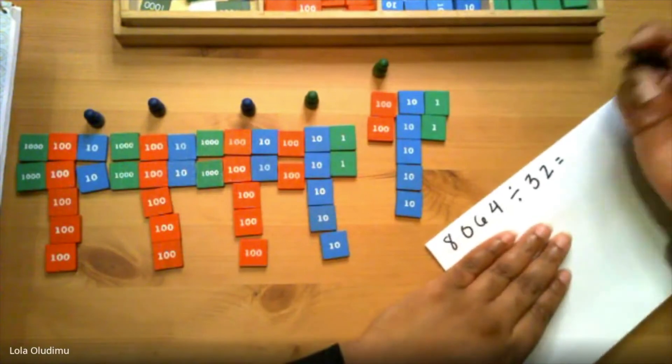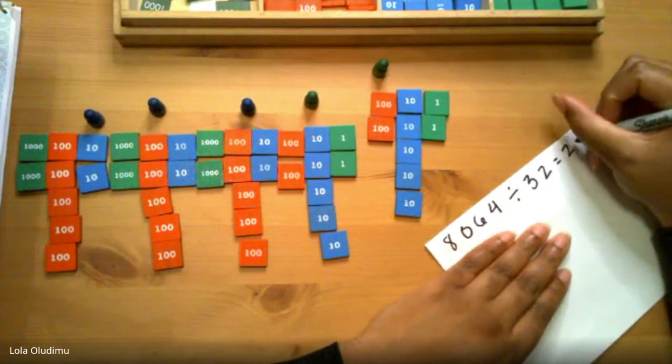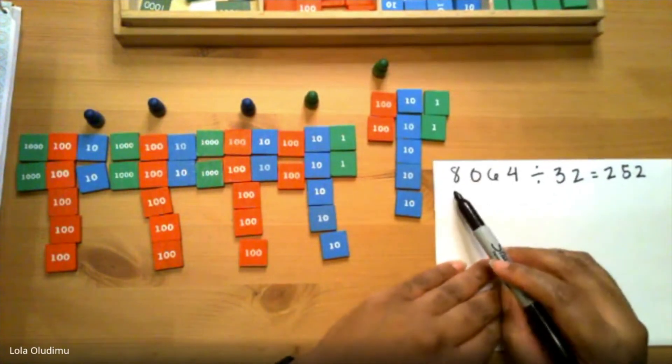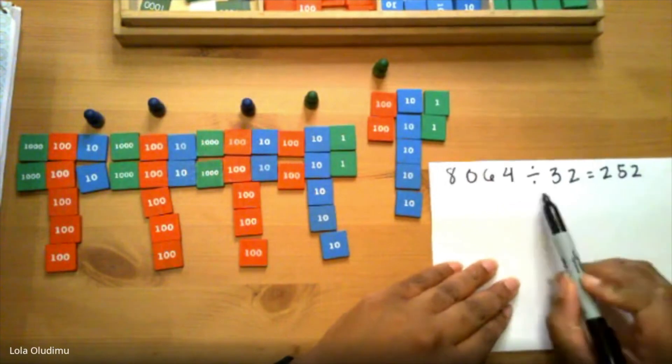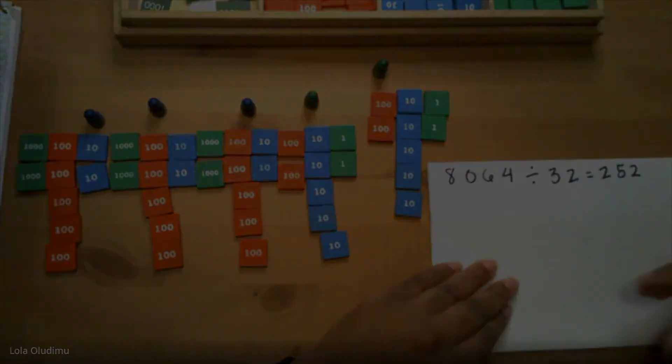When all of the stamps have been shared, we find our answer under one unit skittle. 8,064 divided by 32 equals 252.